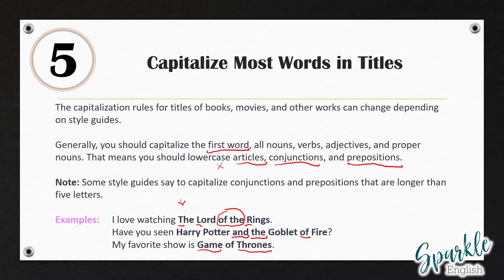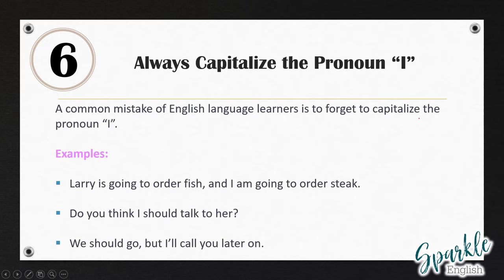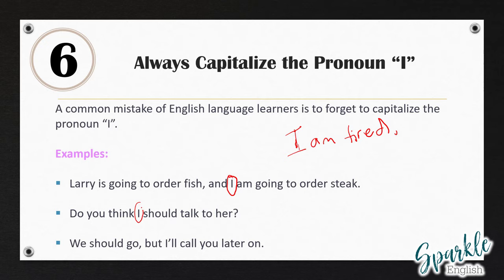Rule number six: always capitalize the pronoun I. A common mistake of English language learners is to forget to capitalize the pronoun I. For example: 'Larry is going to order fish, and I am going to order steak.' You always have to capitalize I — you should never write it as a lowercase letter. 'Do you think I should talk to her?' — capitalized. 'We should go but I'll call you later on.' — capitalized. I'm, I'll, I'd — all of these should be capital I. Always capitalize the pronoun I.